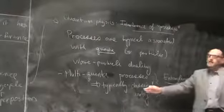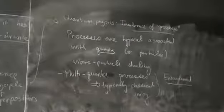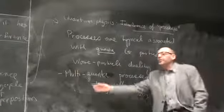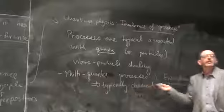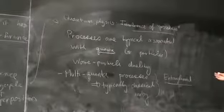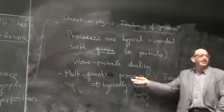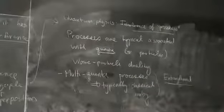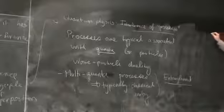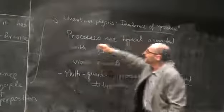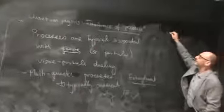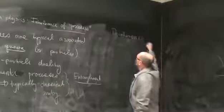Once we start thinking about many-body or multi-quanta type quantum coherent phenomena and entanglement, such systems tend to be fairly delicate. It's quite difficult to have systems that can exhibit multi-quanta or many-body quantum coherent phenomena beyond a few degrees of freedom. And that's going to lead us to the core subject of this semester, which is the problem of decoherence.